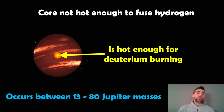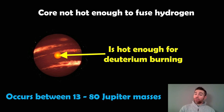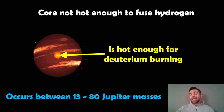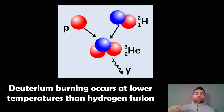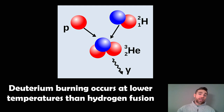In a brown dwarf, the cores are not hot enough to fuse hydrogen — there's just not enough mass to do that. However, they are able to generate energy, but not from hydrogen fusion. They do deuterium burning instead, which occurs at a lower temperature. Once they get to around 13 times the mass of Jupiter and up to about 18 times the mass of Jupiter, they can use this as a mechanism for generating energy. So these are not going to be cold objects. They're called brown dwarfs, but they are hotter than planets. They can still generate energy in their core from deuterium burning: deuterium plus a proton gives helium-3, which releases energy.